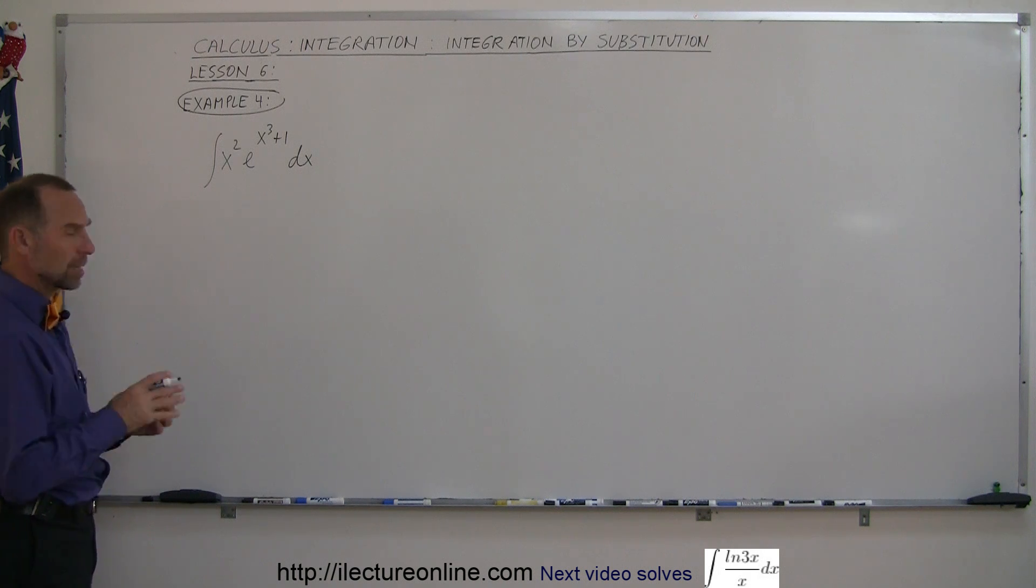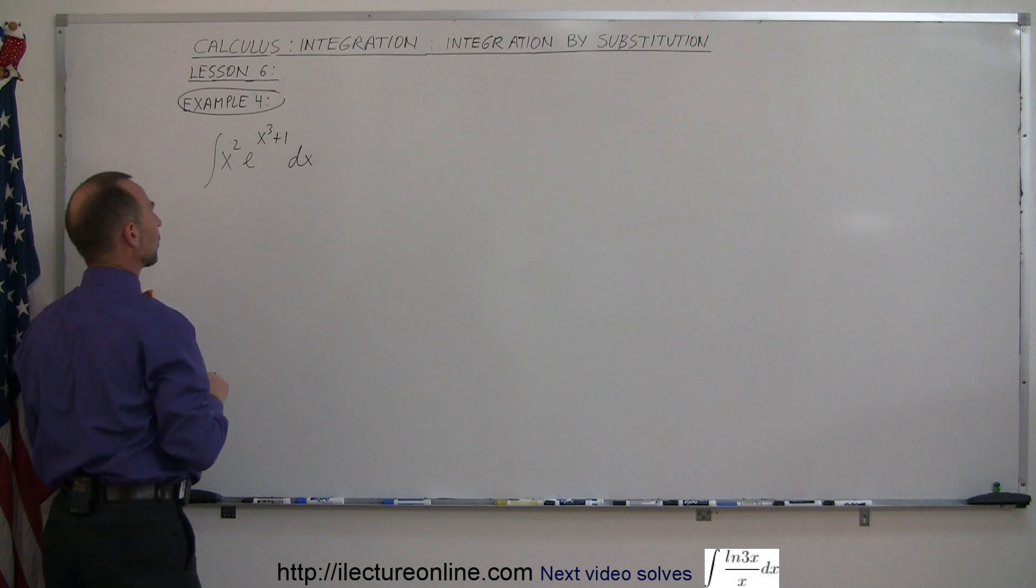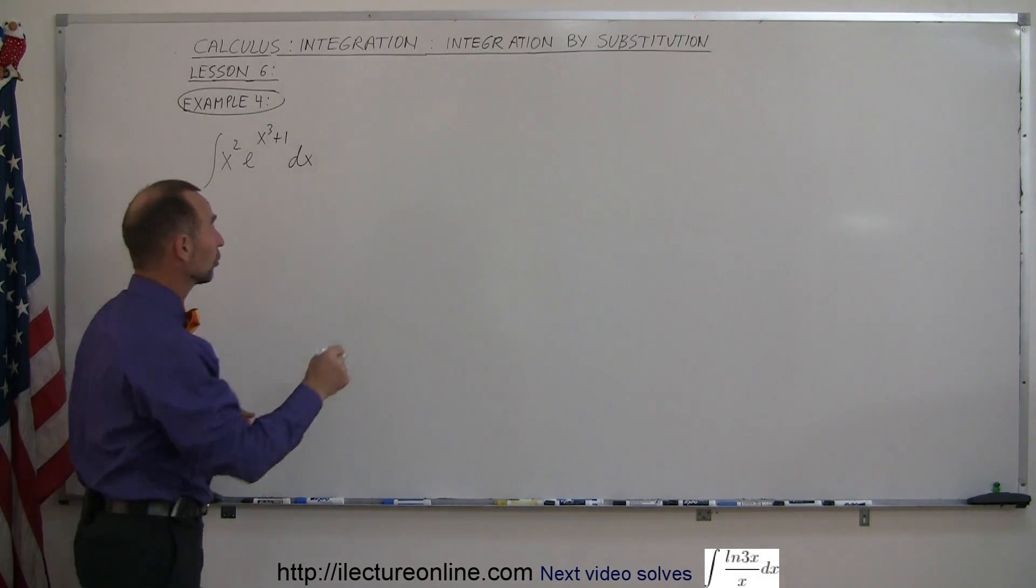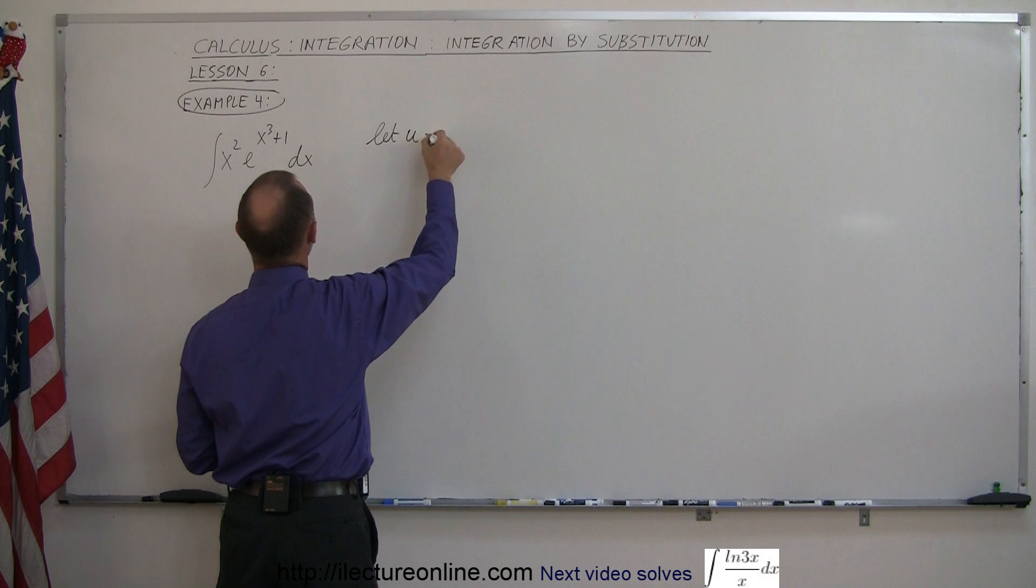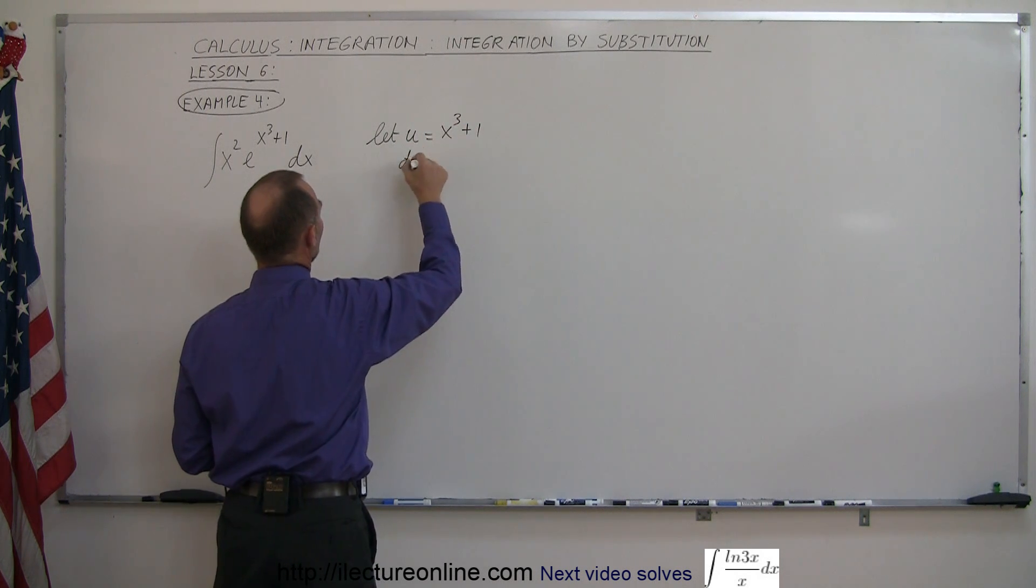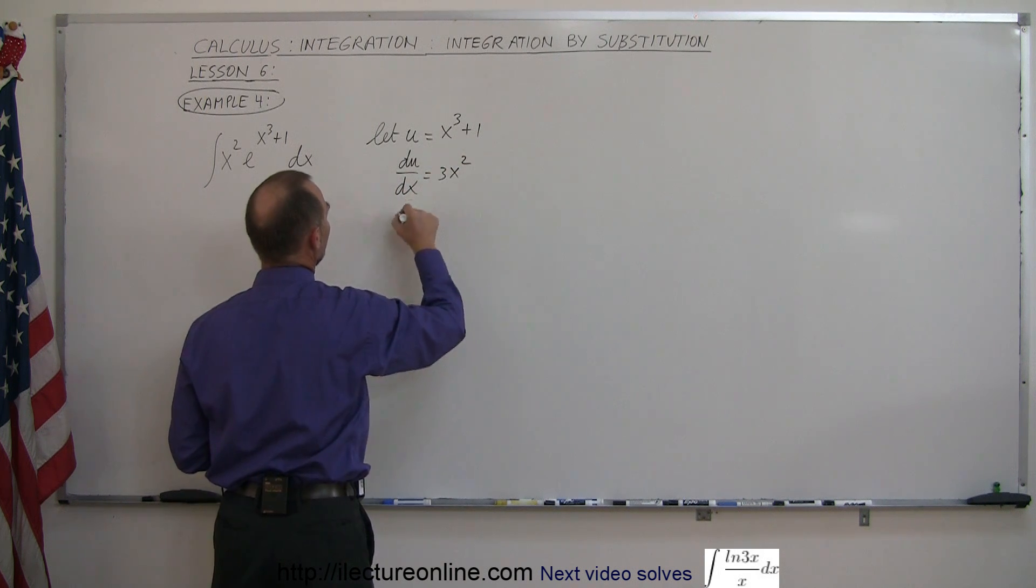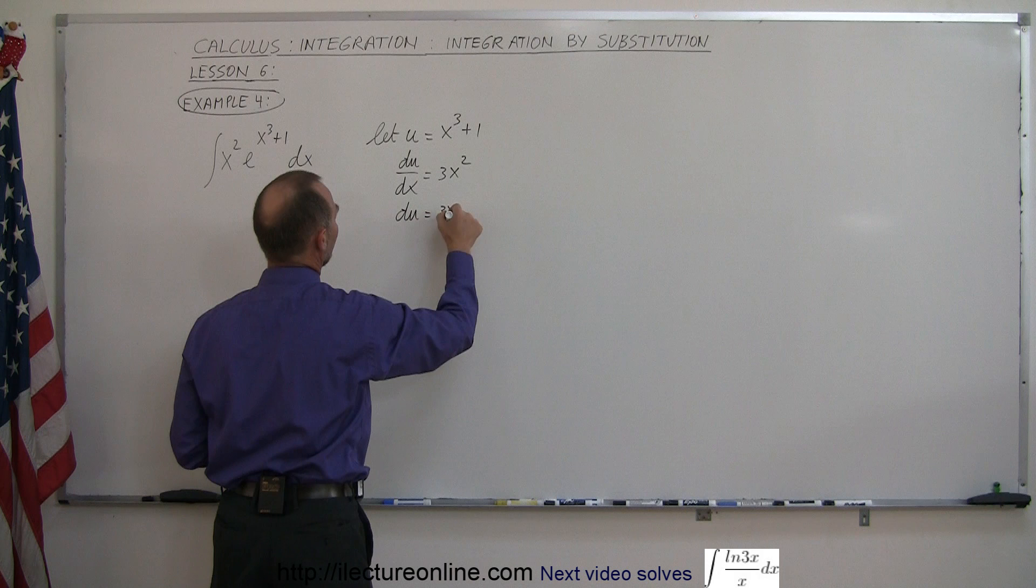What you do here is you take the exponent of e to the x cubed plus 1 and substitute that for u. So you let u equal x cubed plus 1, therefore du dx will be equal to 3x squared, and du will be equal to 3x squared dx.